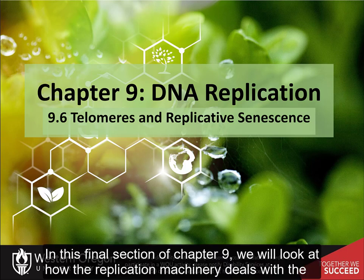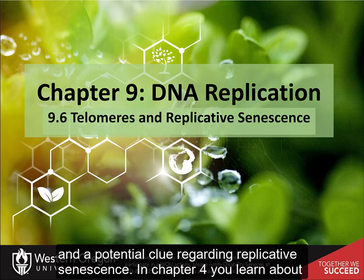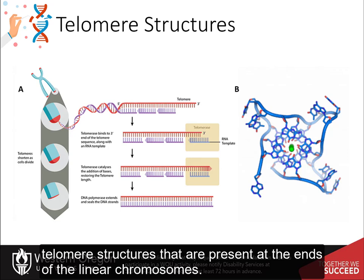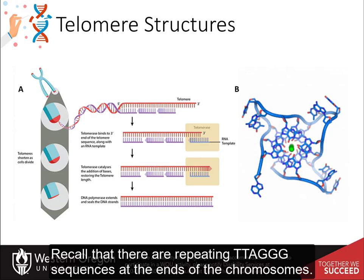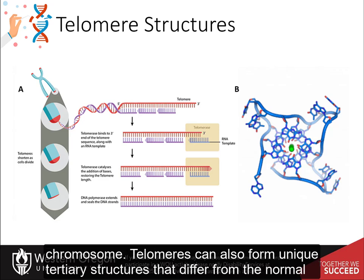In this final section of Chapter 9, we will look at how the replication machinery deals with the ends of the linear chromosomes and a potential clue regarding replicative senescence. In Chapter 4, you learned about telomere structures present at the ends of linear chromosomes. There are repeating TTAGGG sequences at the ends of the chromosomes, and there can be hundreds to thousands of copies of this sequence repeated there.